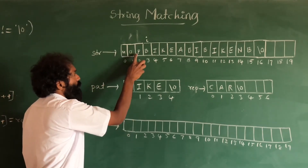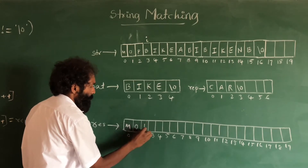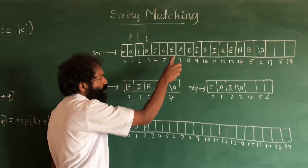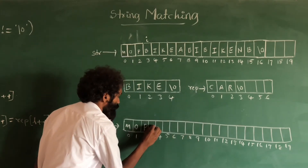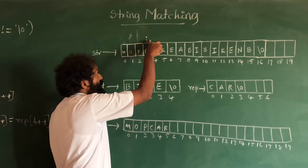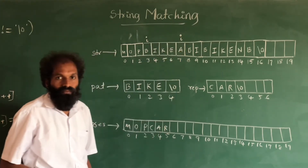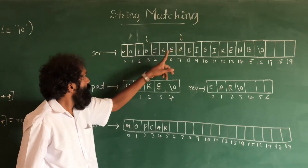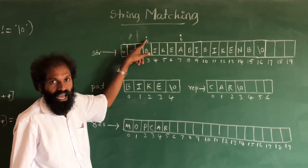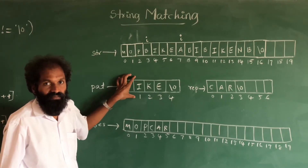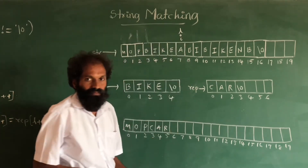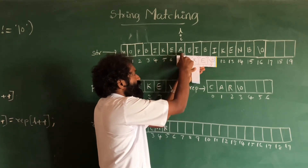So 'm-o-p' we need to copy here. Now instead of 'd-i-k-e' we need to copy 'c-a-r'. Now i we have to advance. How to bring i forward? The length of 'bike' pattern is four, so i plus the length of the pattern — i will jump ahead. Even l we should keep here at the same new position.